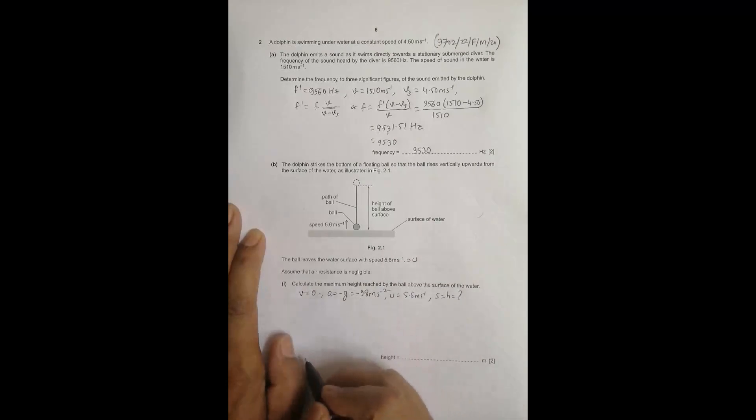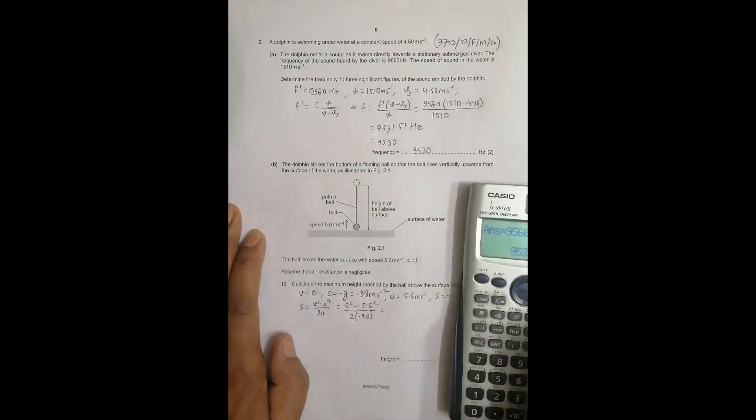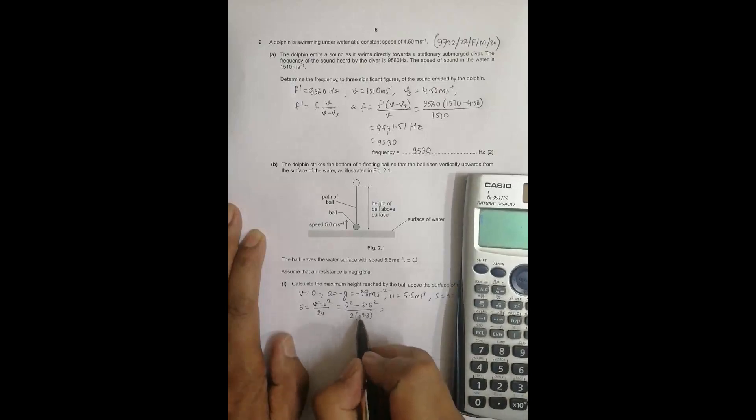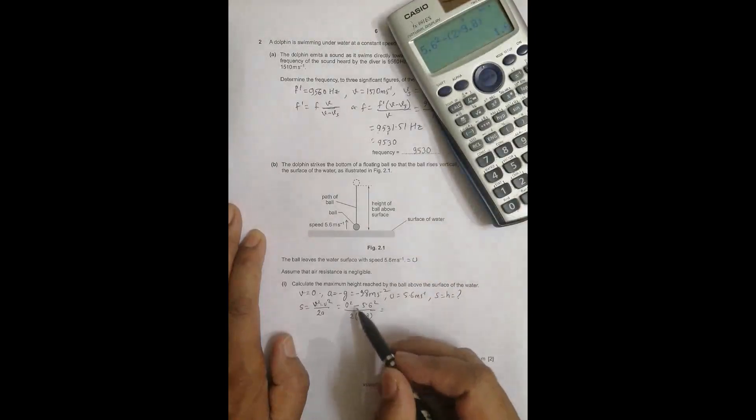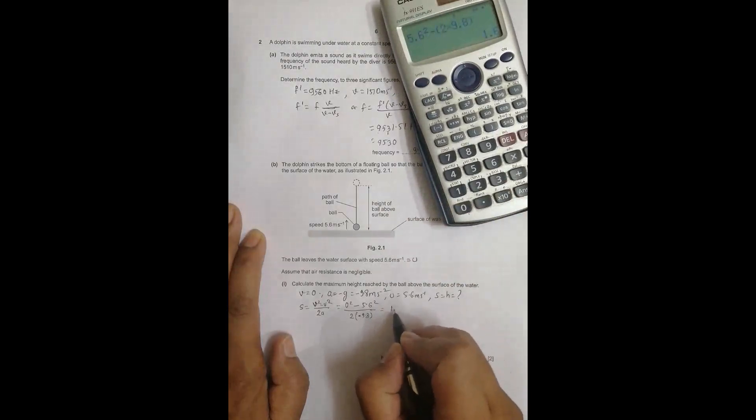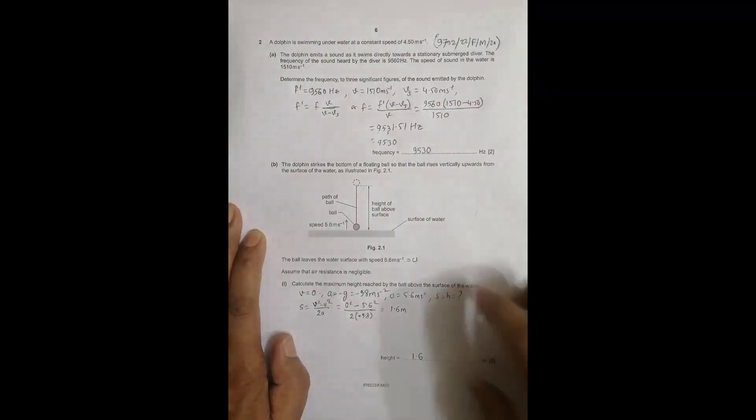The equation is S equals (V squared minus U squared) divided by 2A. So S equals (0 squared minus 5.6 squared) divided by (2 times minus 9.8). This becomes 5.6 squared divided by 2 times 9.8, since the two minuses cancel. This equals 1.6 meters. The ball will rise by 1.6 meters.